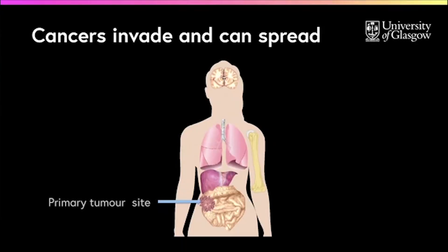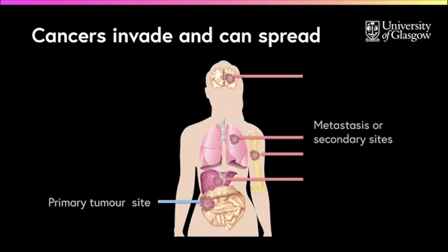Cancer which has spread somewhere else is called a secondary cancer or metastasis, meaning change in place. Cancer can spread via blood vessels or lymphatic channels.